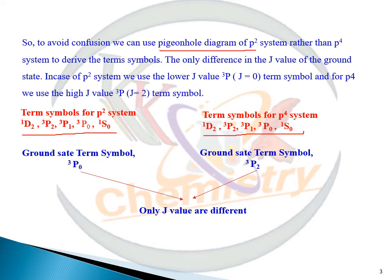What is the difference? The difference in the ground state. Here in P² system the ground state is a triplet P₀, and in case of P⁴ system the ground state is a triplet P₂.